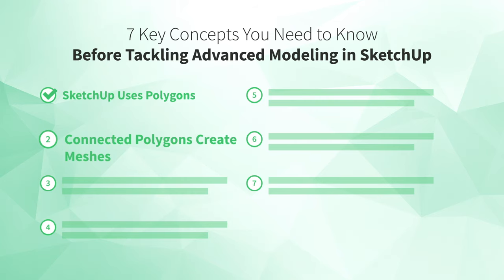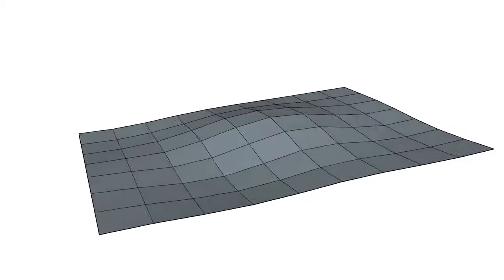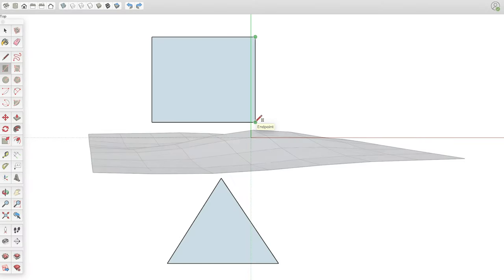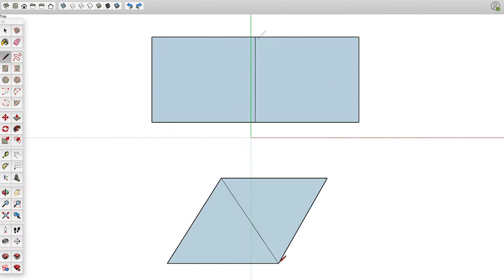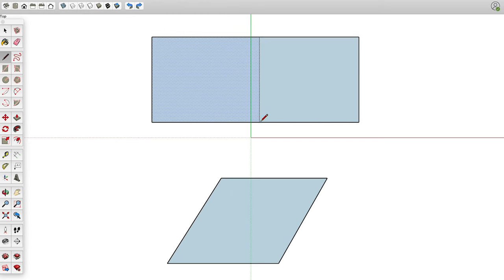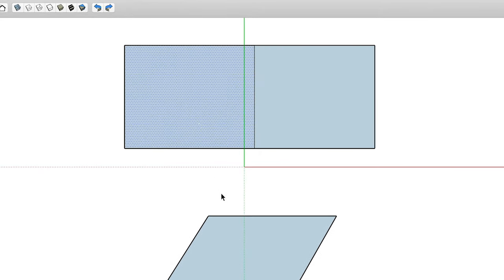The next one is number two: connected polygons create meshes. Whenever you have two or more connected polygons, you have a mesh which can be used to represent a surface. There are two ways to create a mesh. One way is to add new polygons to an existing one. The other way is to subdivide an existing polygon into two or more smaller polygons. Whether you're adding new polygons or subdividing existing ones, you can use SketchUp's basic drawing tools to create meshes. And then you can use SketchUp's basic editing tools to change the position and orientation of the endpoints, edges, and faces that make up the mesh to create more complex 3D surfaces.